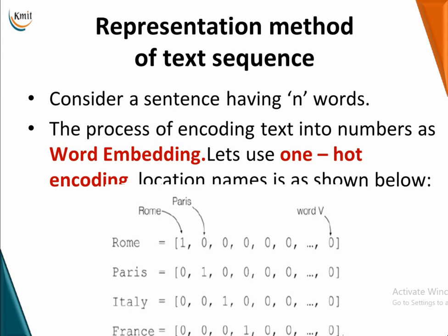Consider having N words; the process of encoding text to numbers is called word embedding. I already explained what one-hot encoding is. Suppose I use four words: Rome, Paris, Italy, and France. I decide on a word vector V of some fixed sequence length. For Rome, the significant value of one will shift position to represent every single word. This type of encoding used in word embedding is one-hot encoding.